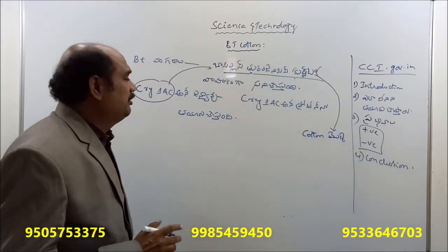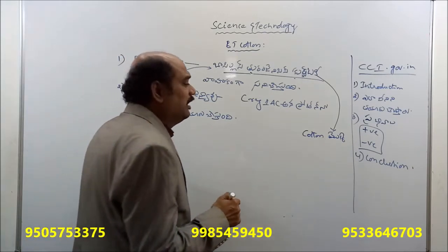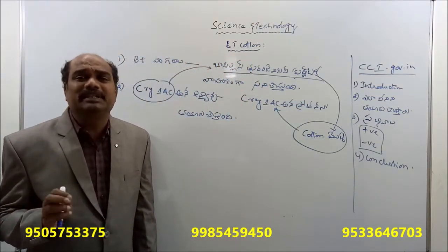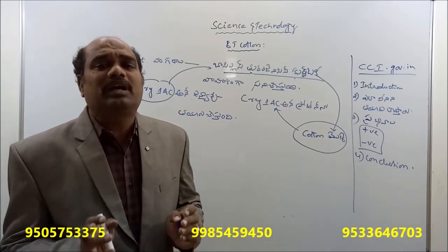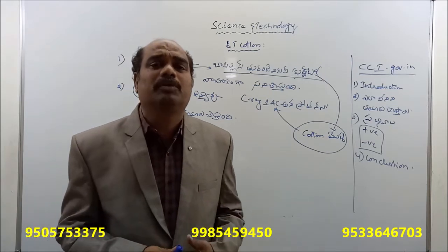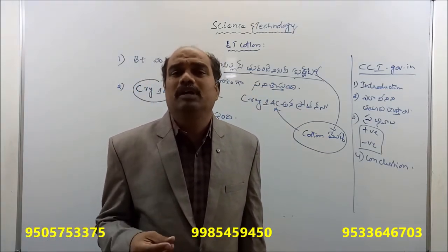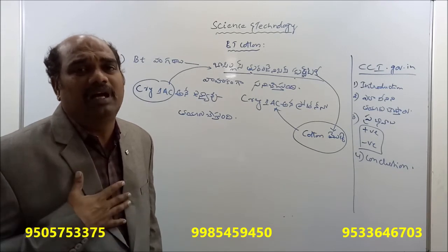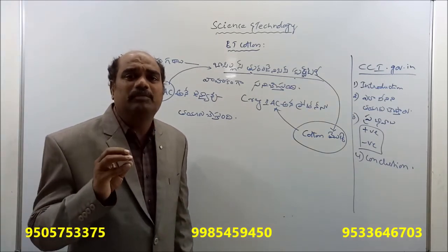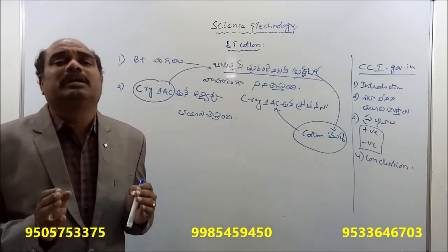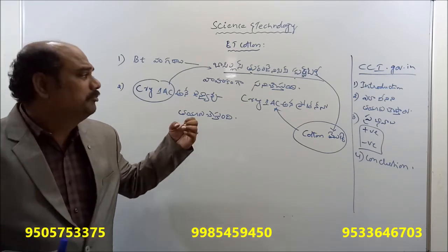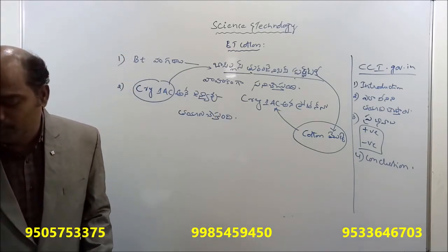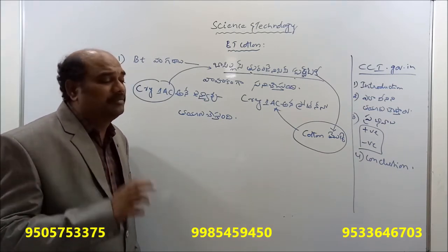Why are the cotton plants infected? Because of the cotton plant, we produce a crystal protein — crystal vannies. This crystal protein is produced in the cotton plant. The crystal vannies protein produced a small amount in the cotton plant provides the protective mechanism.